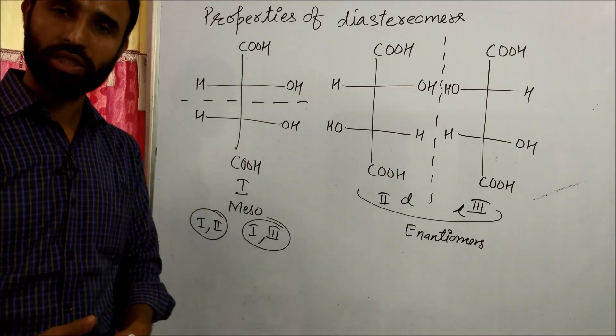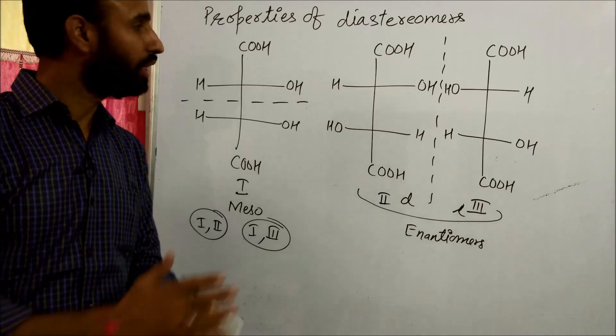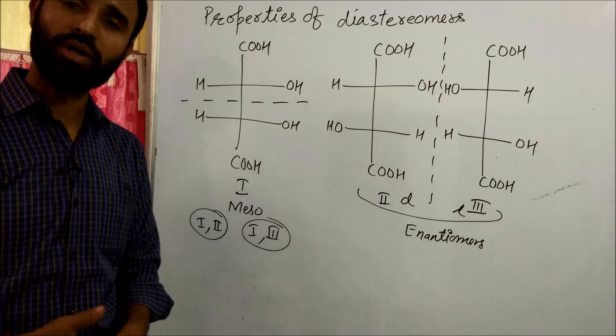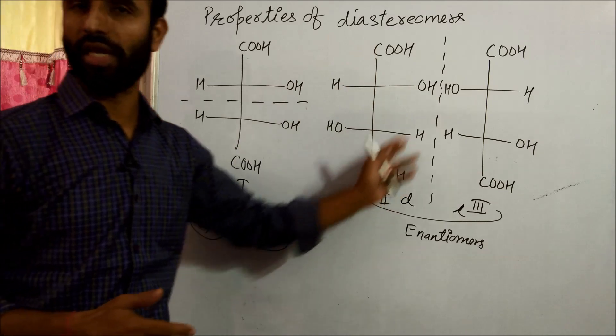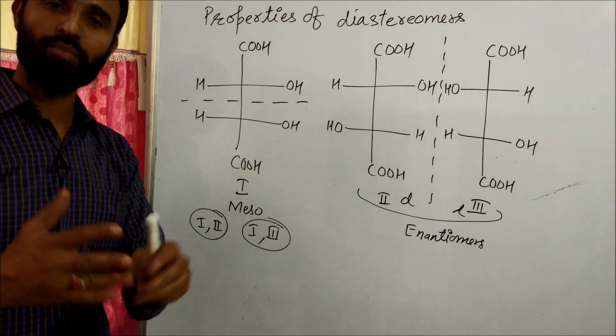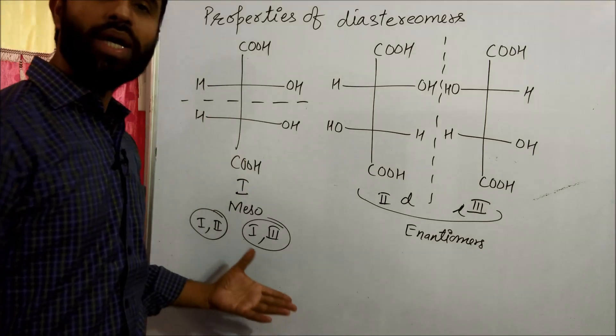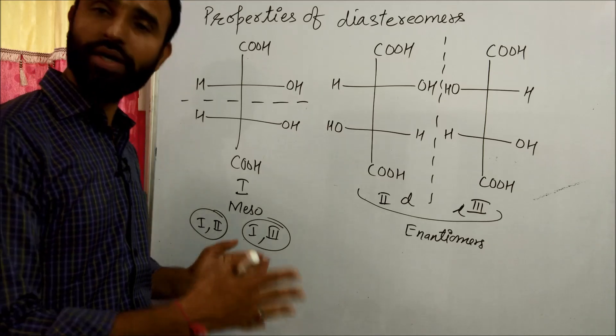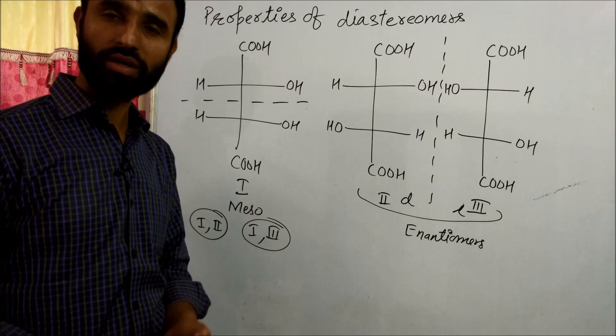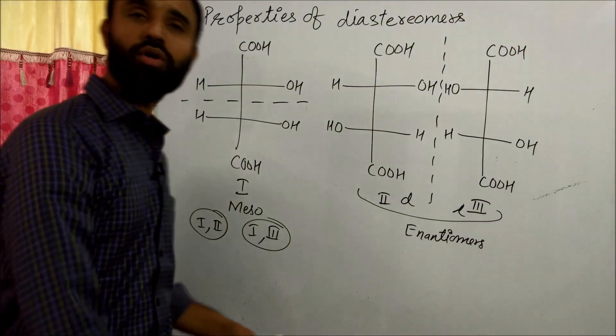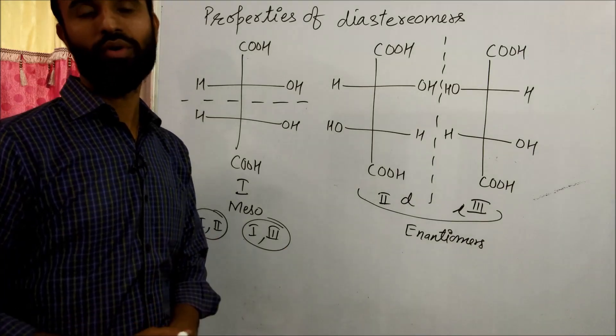So their physical properties like refractive index, solubility, melting point, boiling point, they all differ. Even they differ in chemical properties to some extent, but because their functional groups are same, so their chemical properties are not too dissimilar. And as diastereomers have different solubility, they can be easily separated by fractional crystallization. And because of slight difference in their shape, they can be separated by chromatography.